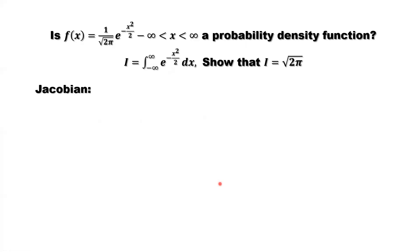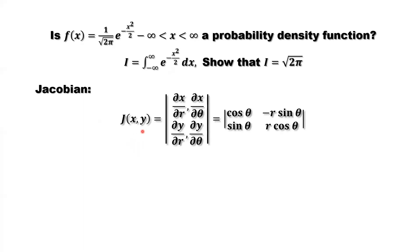We need to use the change of variables formula for double integral to solve our question. Based on that formula, we need to figure out what is the Jacobian of this transformation of variable. This is the definition for Jacobian: derivative of x with respect to r, derivative of x with respect to θ. Same thing here for y. This is the determinant.